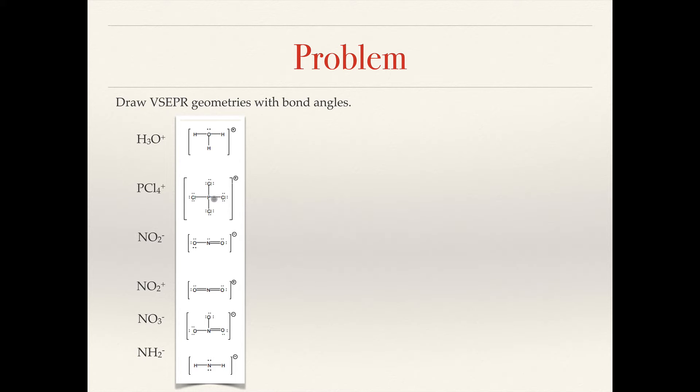This would be AX4. This would be AX2E1 because we have two outer atoms and one lone pair on the center atom. This would be AX2, AX3. Again, we're ignoring double or triple bonds. We don't have any triple bonds here, but we would ignore those if we did, and this would be AX2E2. So hopefully we have that provided in the column on the right.